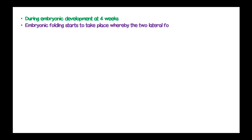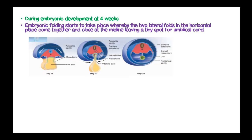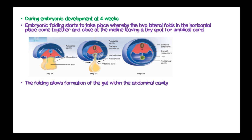During embryonic development at four weeks, embryonic folding starts to take place whereby the two lateral folds in the horizontal plane come together and close the midline, leaving a tiny spot for the umbilical cord. This folding allows formation of the organs within the peritoneal cavity.